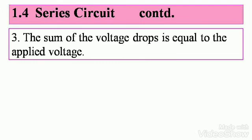Remember this: the sum of the voltage drops is equal to the applied voltage. These are the two main points to remember while dealing with a series circuit — the current is the same through all resistances, but the sum of the voltage drops is equal to the applied voltage.